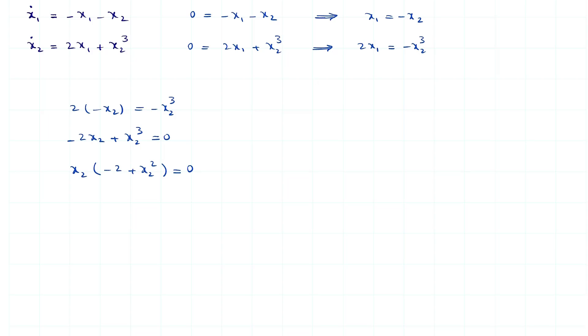So, the product of two terms equals 0. This means that either the first term which is x2 equals 0 or the second term which is minus 2 plus x2 squared equals 0, which actually means that x2 squared equals 2, which means that x2 equals the square root of 2 or x2 equals minus square root of 2.